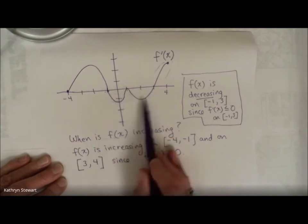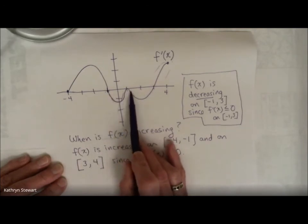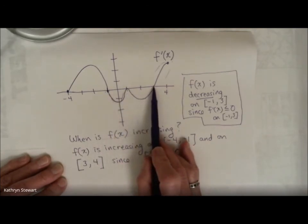The derivative is in negative land, which means that for this whole time here, the slope of my original function is negative.